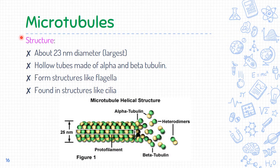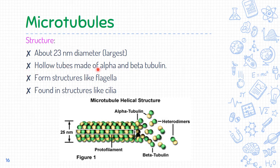The last main component of the cytoskeleton is the microtubules. They are the largest cytoskeleton component at about 23 nanometers in diameter, which is why they are called tubules, not filaments. Microtubules are hollow tubes made of alpha and beta tubulin subunits. These microtubules form structures like flagella and are also found in cilia.